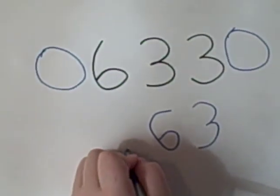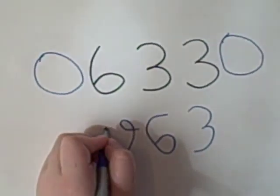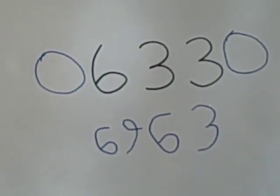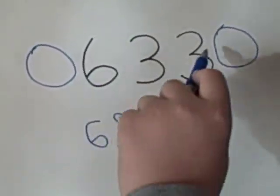3 plus 6, 9, and then 6 plus 0, so 6. That's going to be your full answer. And you will always start with the same first and last digit.